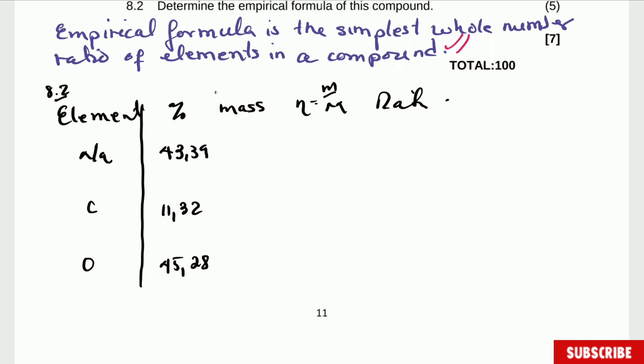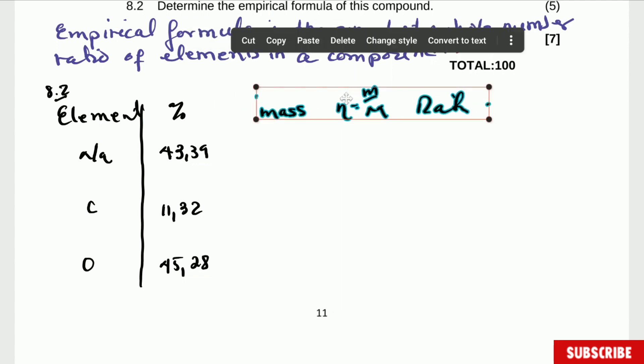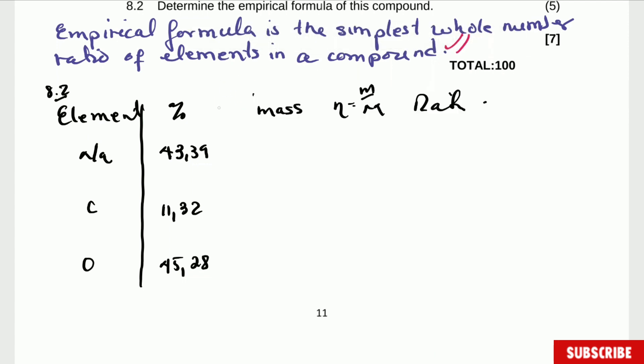Okay so now for mass, mass is exactly the same. Let's move all this now a little bit to the left, there's no need of pressing that. So there is mass, mass guys is the same as the percentage because we're taking like if it's out of 100 grams. Out of 100 grams this one will be 43.39 grams, this one is 11.32 grams and this one is 45.28 grams.